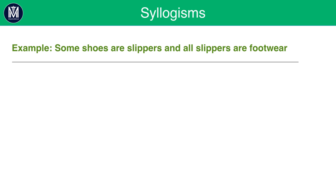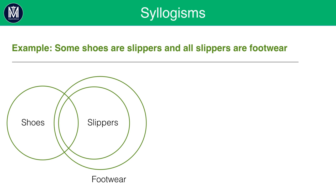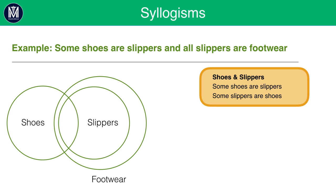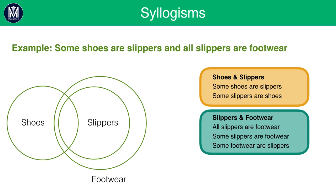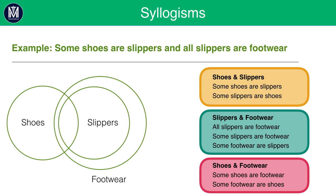For example: 'some shoes are slippers and all slippers are footwear.' Between shoes and slippers: some shoes are slippers, some slippers are shoes. Between slippers and footwear: all slippers are footwear, some slippers are footwear, some footwear are slippers. Between shoes and footwear: some shoes are footwear, and some footwear are shoes.